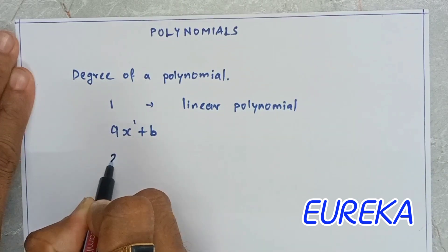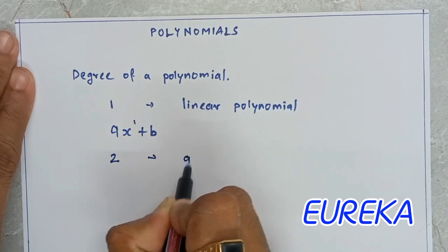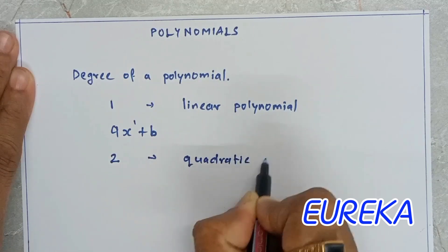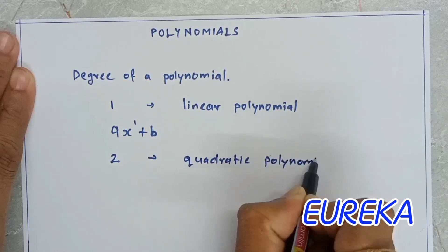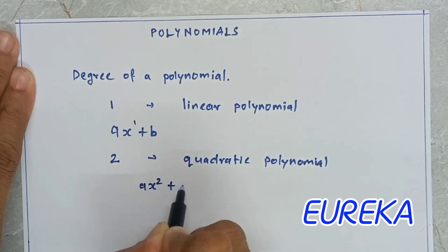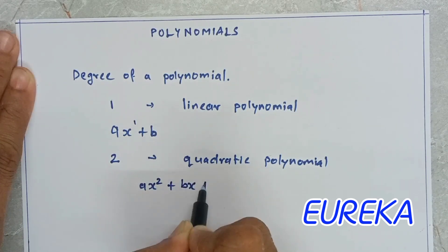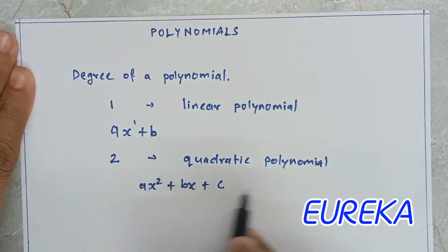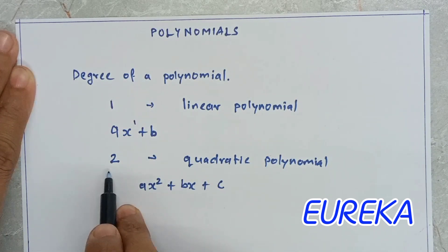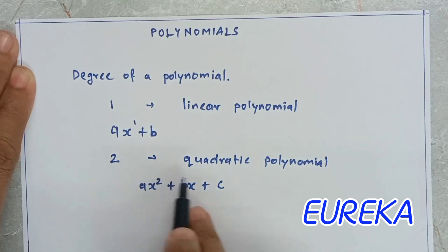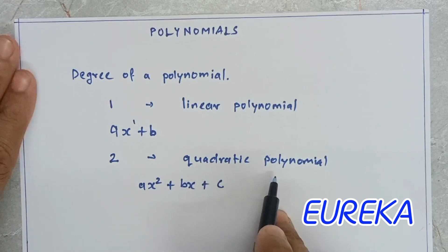When the degree is 2, we call it a quadratic polynomial. The example is ax squared plus bx plus c. The variable is x; the power of x is 2 in the first term and 1 in the second. The highest power is 2, so the degree is 2. Because the highest power is 2, we call the degree of the polynomial 2, and such a polynomial is called a quadratic polynomial.